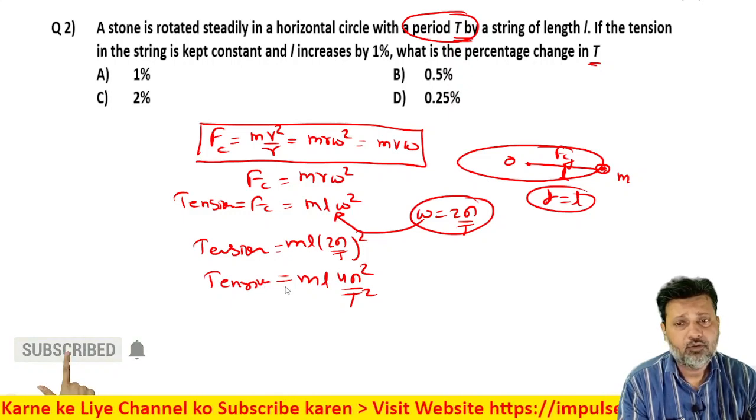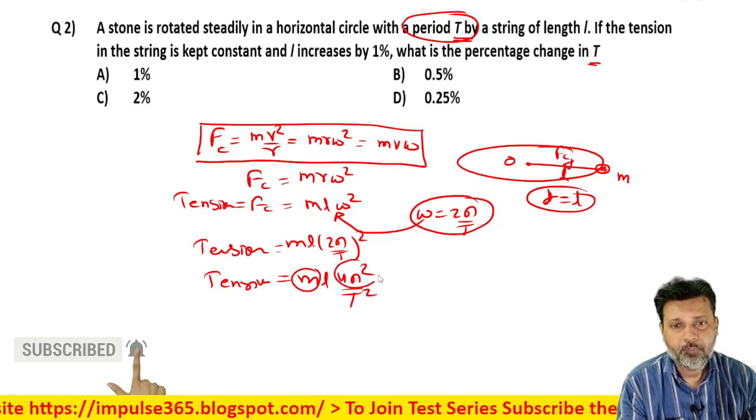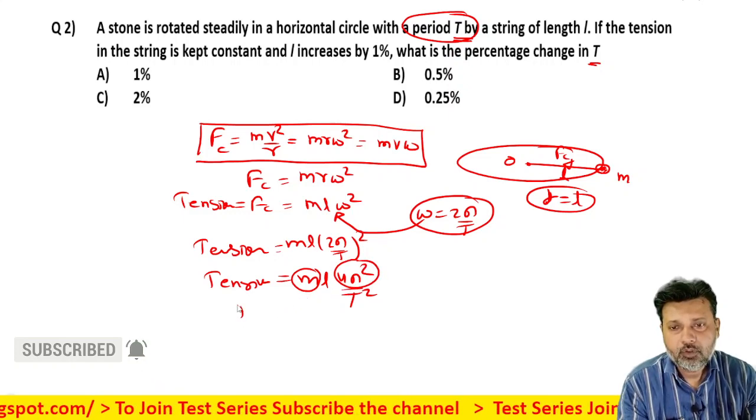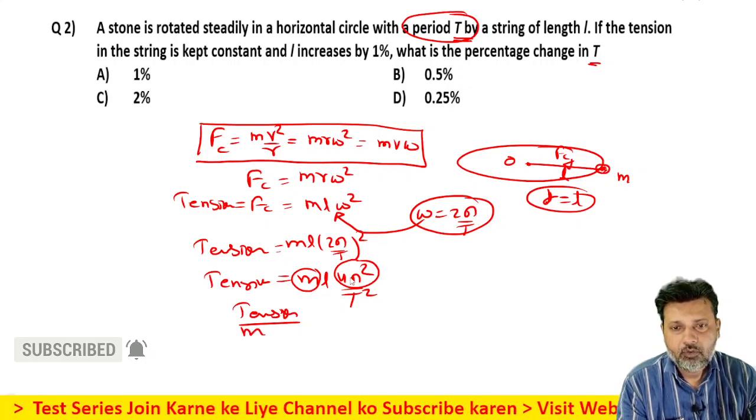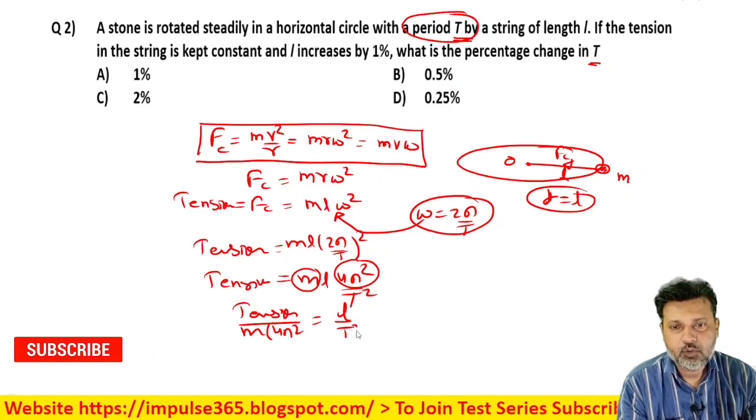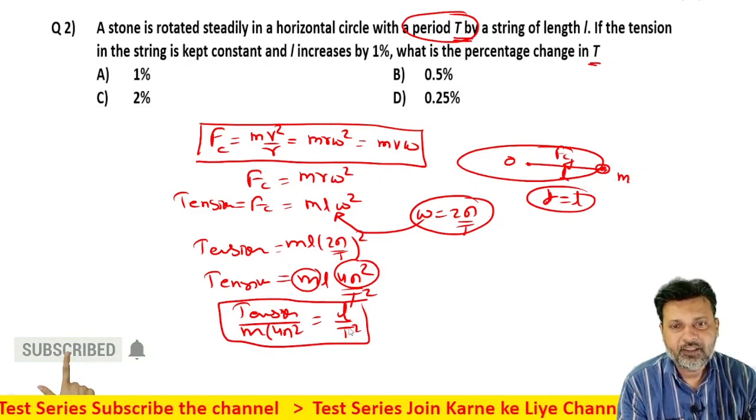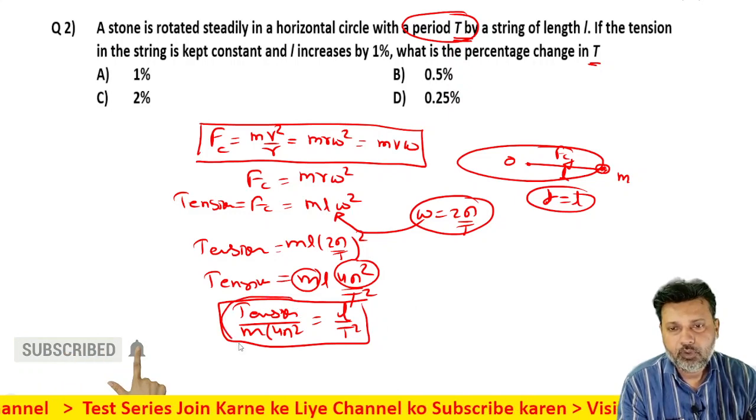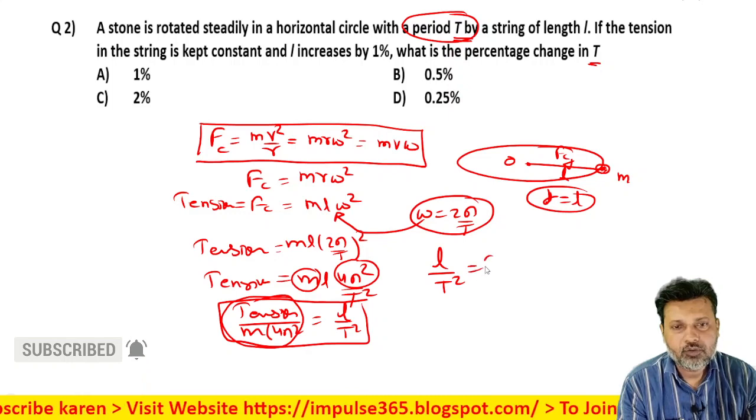Tension is constant and mass is also constant, and 4π² is also constant. Moving tension divided by m and 4π² to the other side, we get L by T². L by T² - length of the thread divided by time period squared - this entire left side value is constant. It means L by T² is also constant.